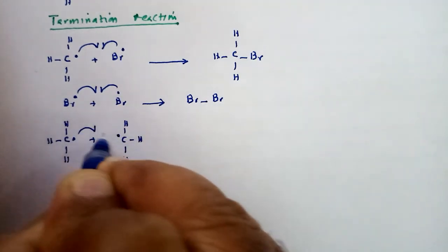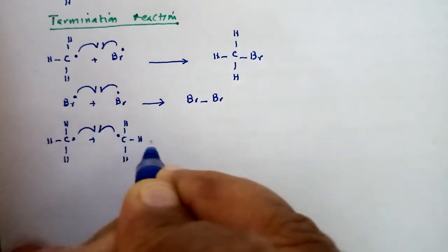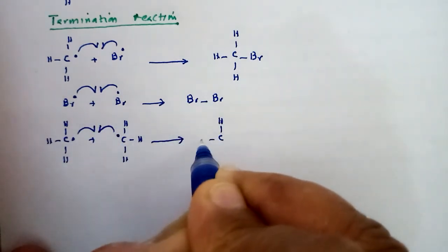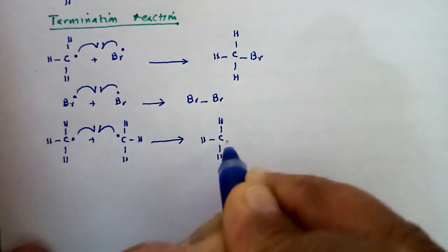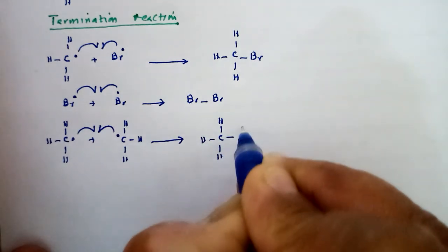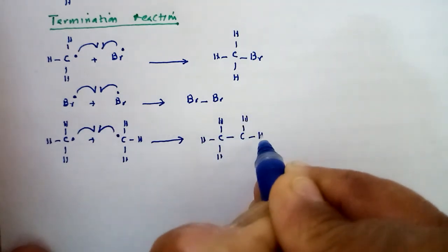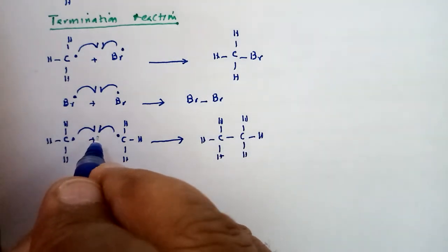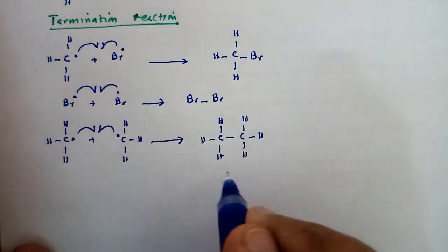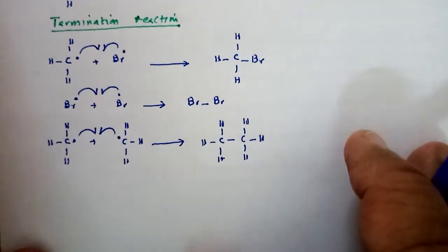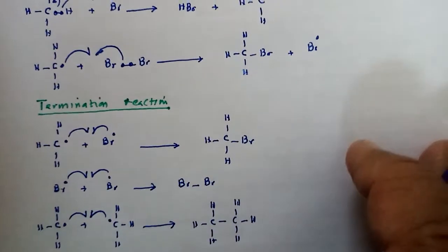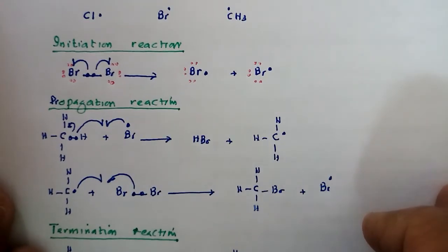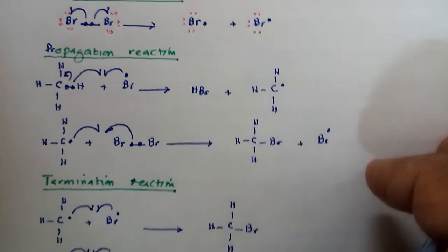Two bromine free radicals can also react with each other — both bromine atoms mutually share one electron each to form a bromine molecule. Two methyl free radicals can also react with each other, both carbons sharing one electron each to form ethane. The single-headed arrow in the diagram represents one unpaired electron. This completes the free radical mechanism for the reaction of bromine with methane.